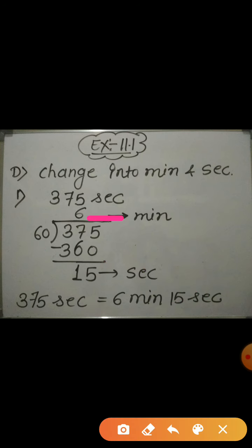Here, the quotient is 6 which we consider as a number of minutes. Remainder is 15 which we consider as a number of seconds. Hence, 375 seconds is equal to 6 minutes, 15 seconds.